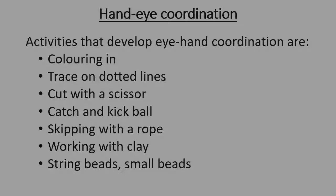Activities to help the child develop hand-eye coordination: colouring in — we can find colouring books everywhere; tracing on dotted lines; giving the child scissors to cut out pictures; catching and kicking a ball — very good for hand-eye coordination; skipping with a rope; working with clay; and stringing beads — both small and bigger beads. All of these help with hand-eye coordination.